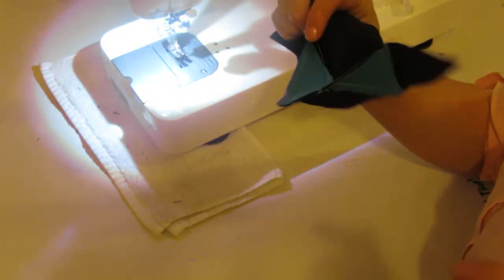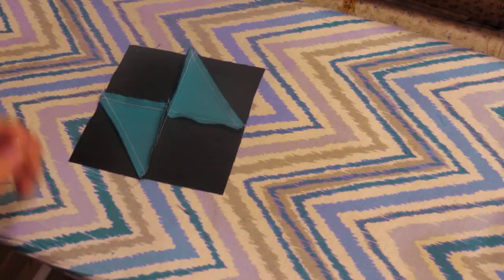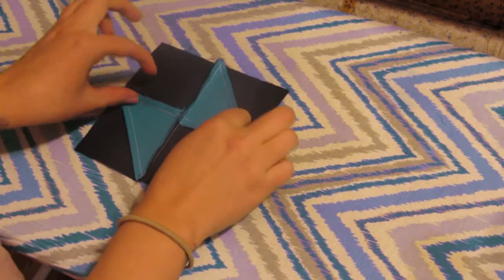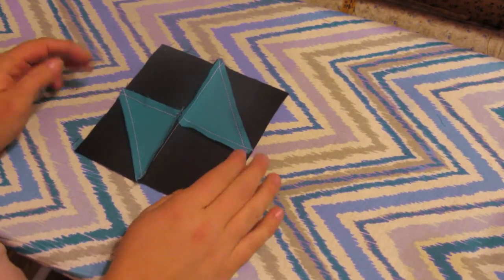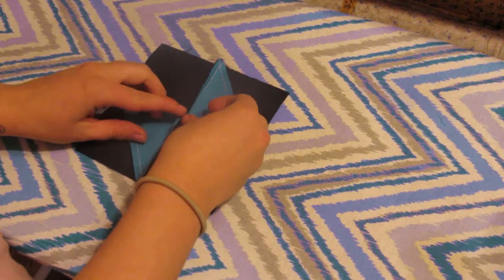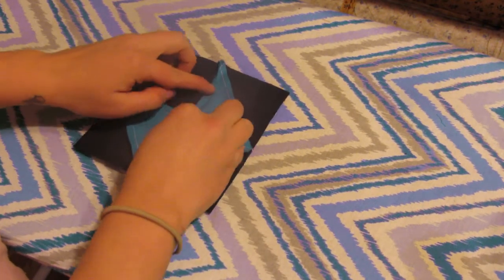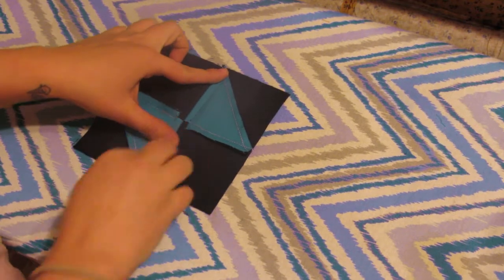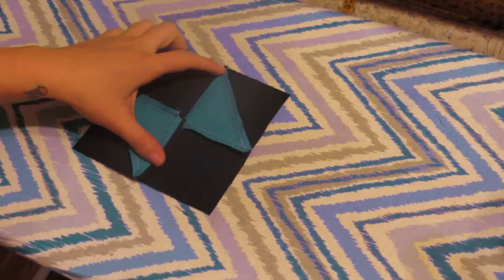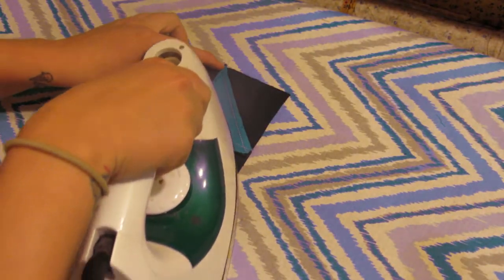Now we're going to go and press this to finish it. Now for this last seam, since there's the same amount of bulk on both sides, my personal preference is to press these seams open. So all you do is open up the seam, give it a little finger press, get your iron in there.